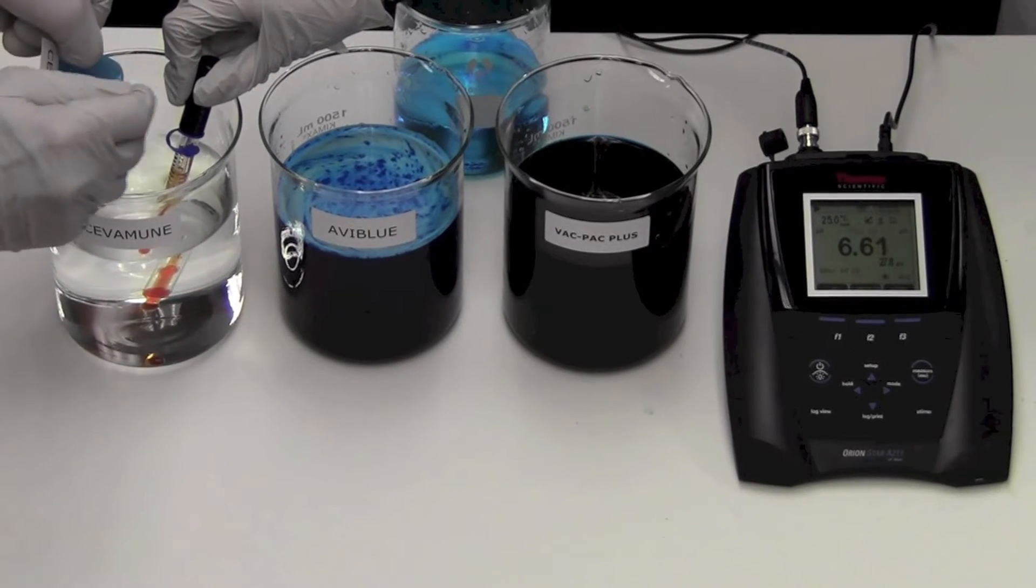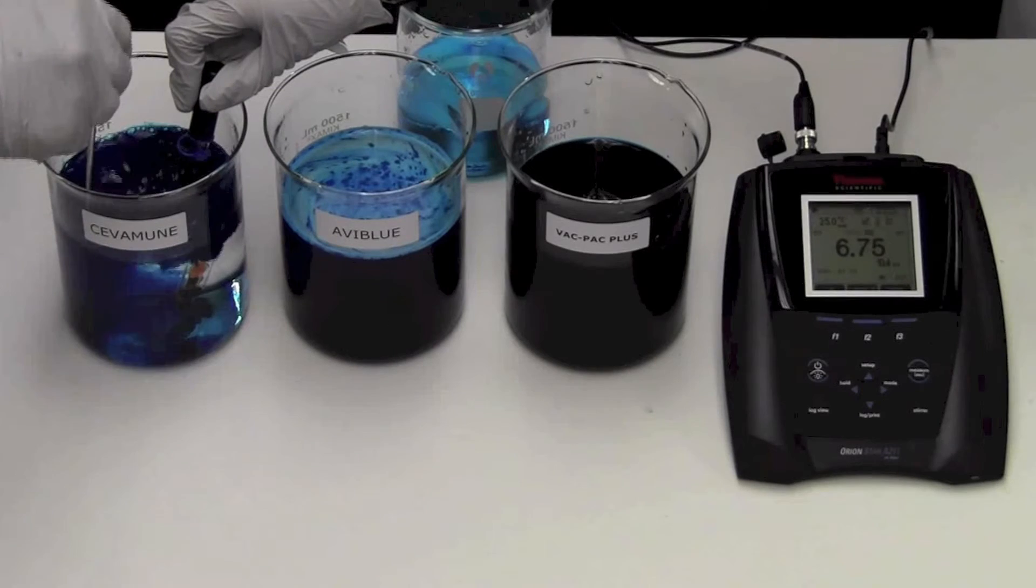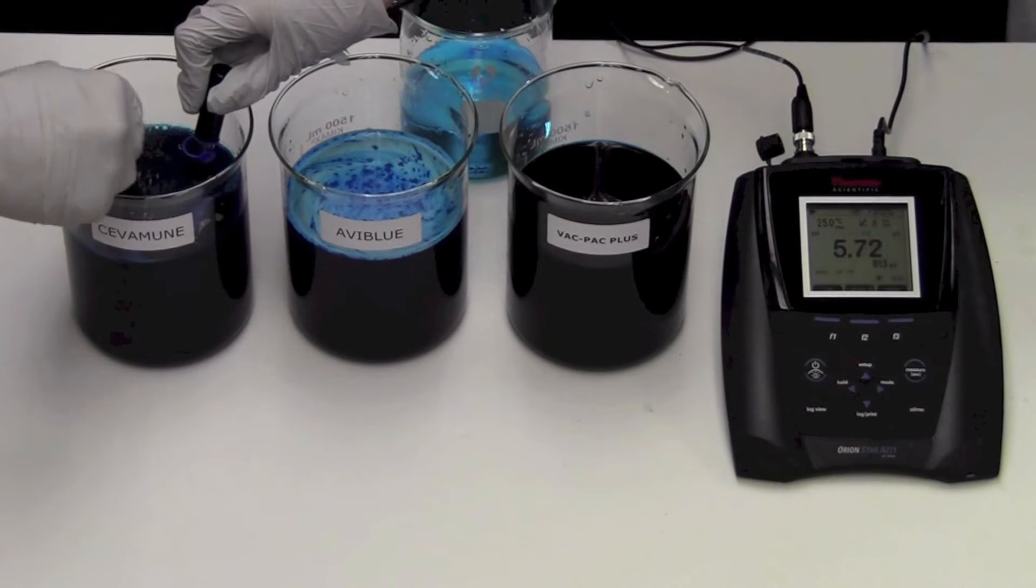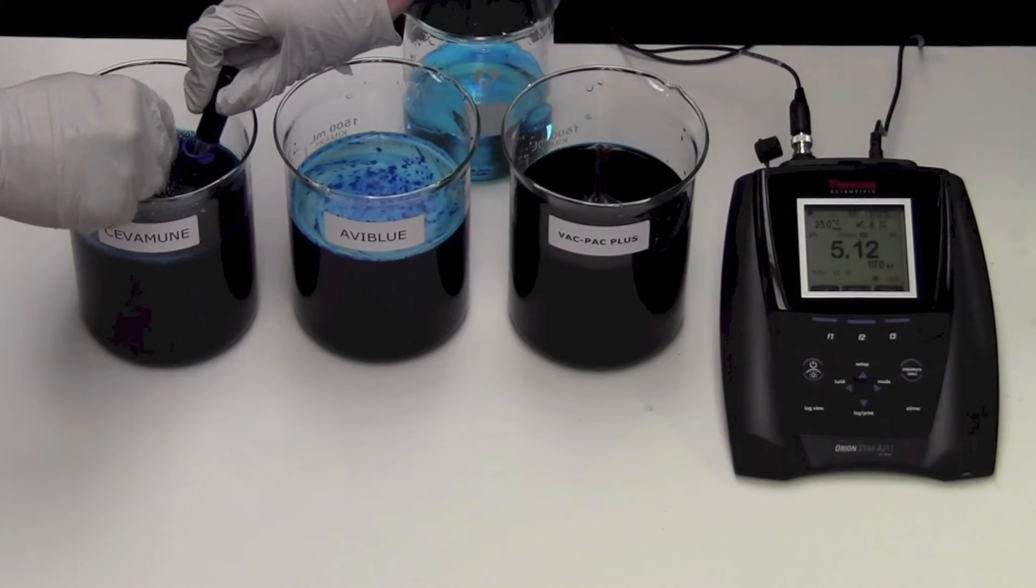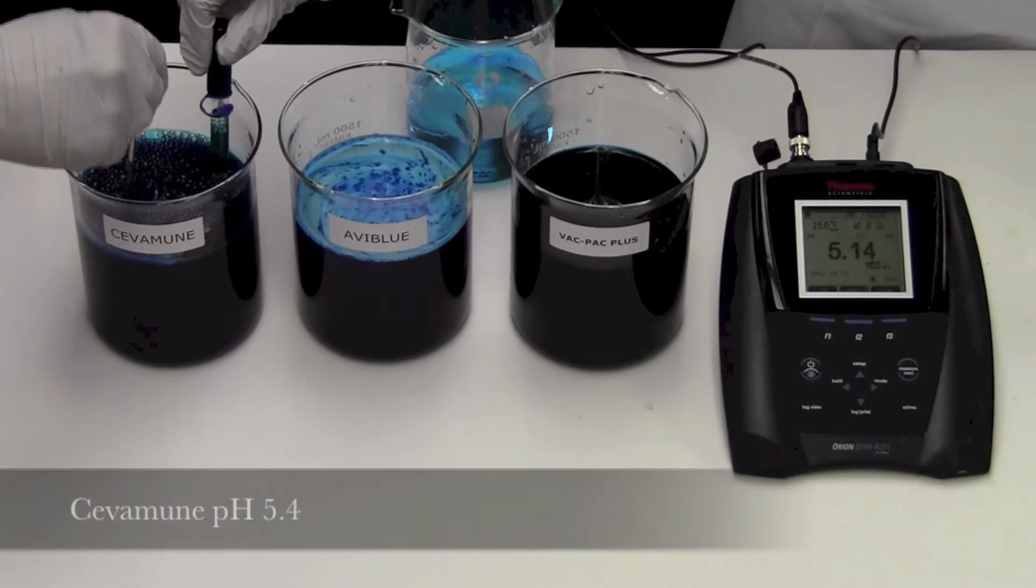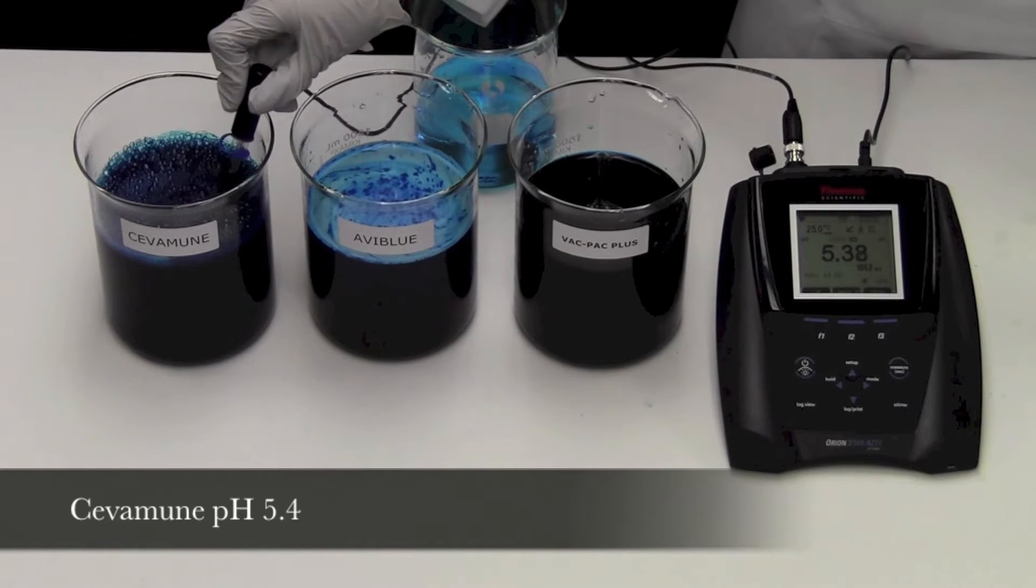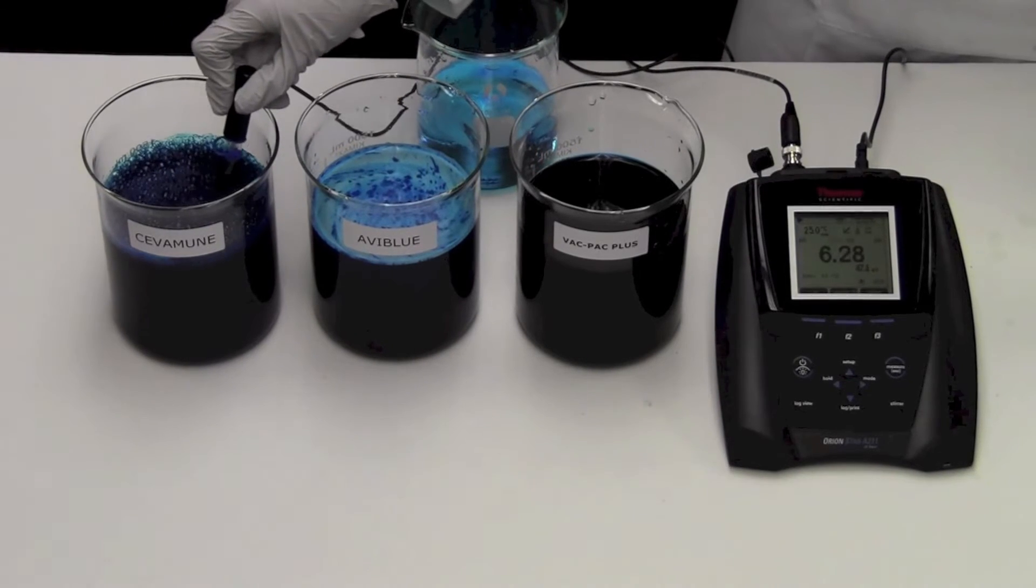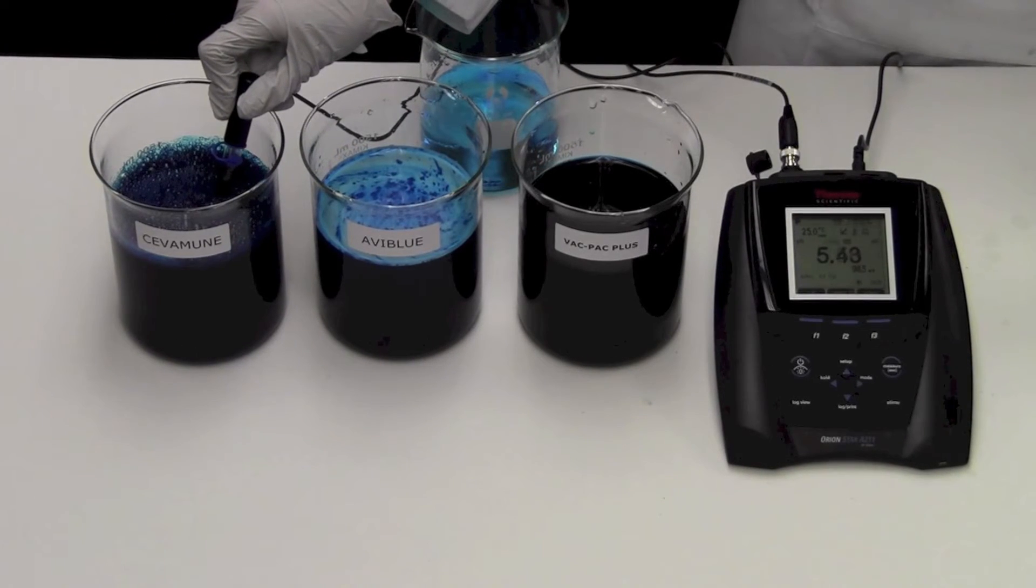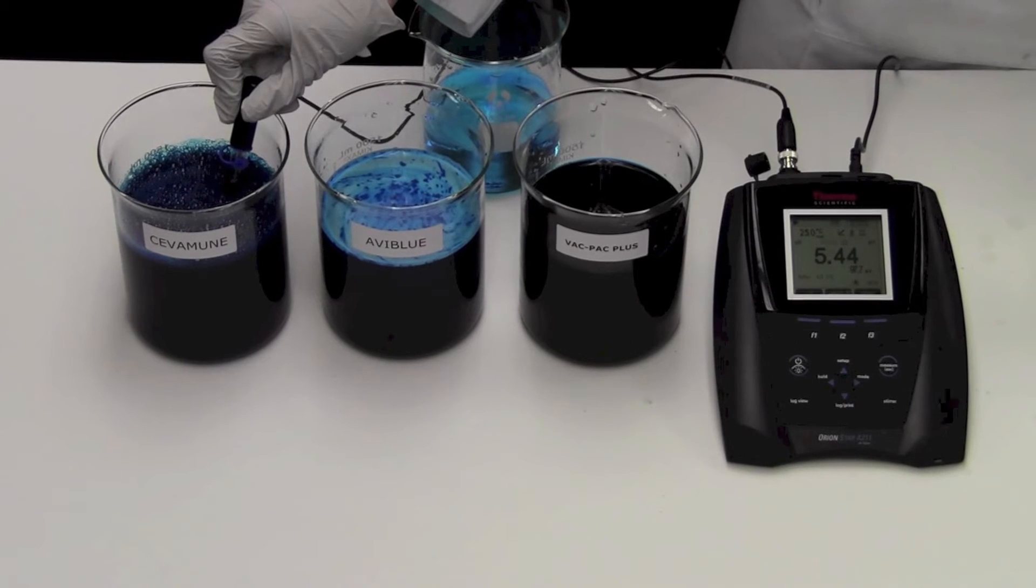When we add the Sivamune tablet, watch the pH. Immediately the pH also falls as the effervescing tablet releases acid into the vaccine solution, dropping the pH to around 5.4. Again, the acidity you see here is obviously not ideal for vaccine survival.